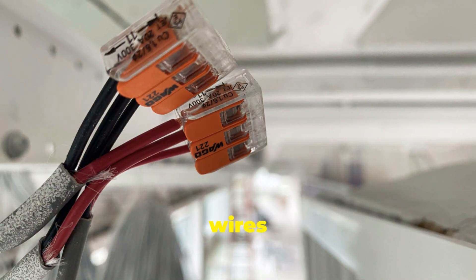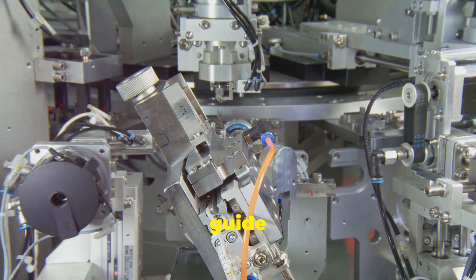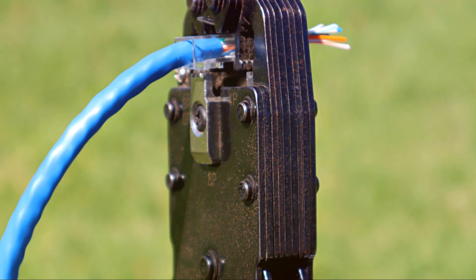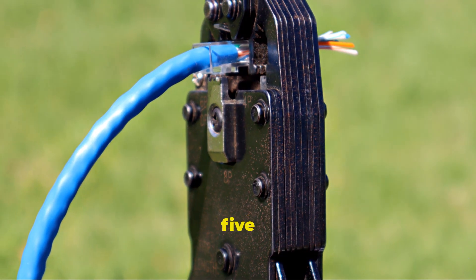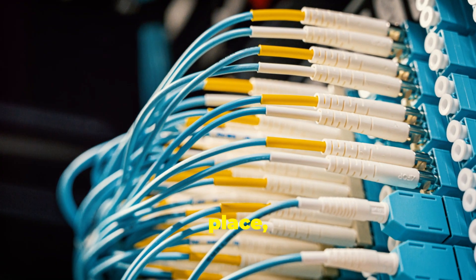If you find it tricky to get all the wires in at once, try using a pair of needle-nose pliers to carefully guide them into place. Once the wires are securely in place, it's time to crimp.